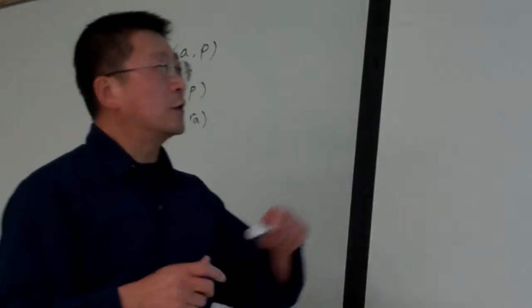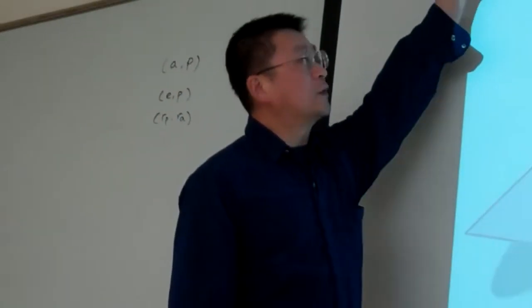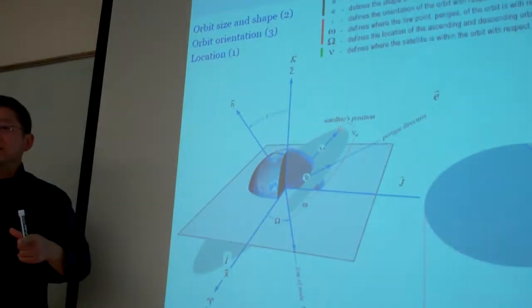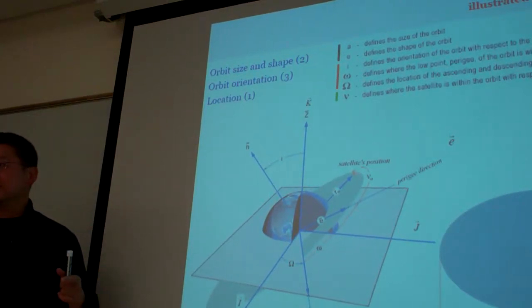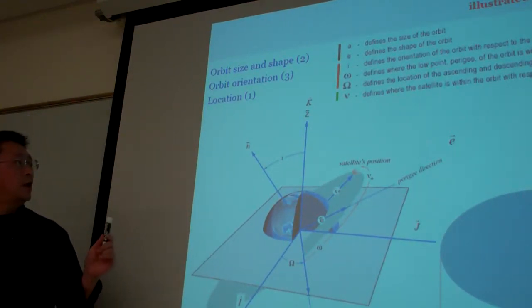So here, as long as we have two parameters, then we can uniquely define the shape and size of, in particular, the elliptic orbit.